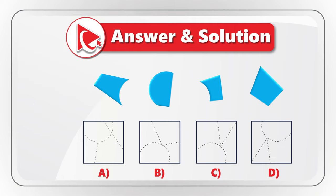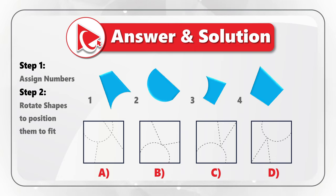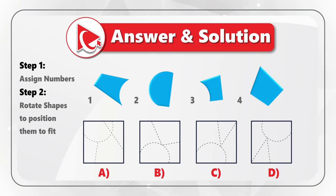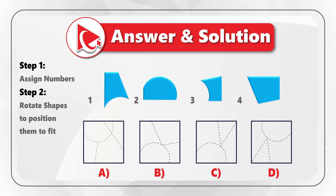Let's look at the example. Let's first assign each shape a number. Because we have four shapes, the numbers will be 1, 2, 3, and 4. The second step is the hardest. In this step, you need to rotate the shapes to position them to fit and find the closest square which fits all the shapes. Let's rotate each shape to get them into the correct position: shape 1, now shape 2, now shape 3, and now shape 4. You need to watch out, because rotation could be in different directions, as it happens in this question as well.